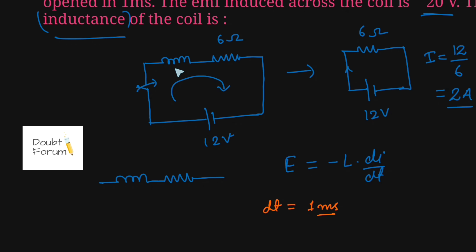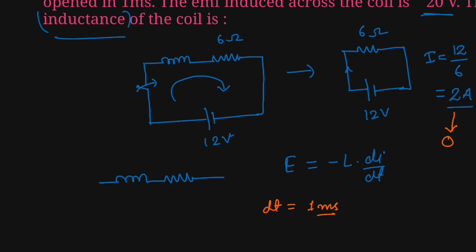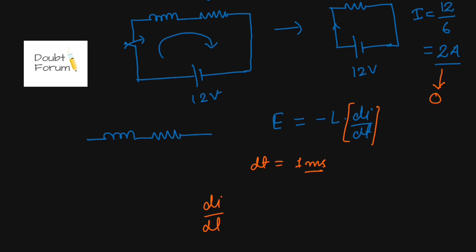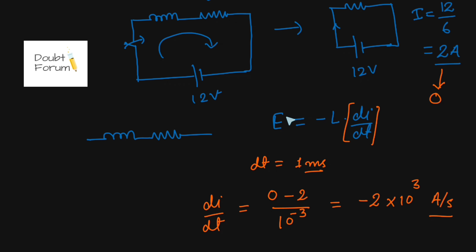The current flowing before the switch was opened was 2 ampere, and when the switch is opened, the current turns out to be zero. So the current decreases from 2 ampere to 0 ampere in one millisecond. Therefore, di/dt = (0 - 2) / (1 millisecond), which comes out to be -2 × 10³ ampere per second.